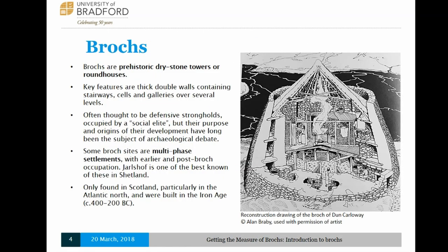In a nutshell, the best way to describe brochs is as prehistoric dry stone towers or roundhouses. They're circular and have key unique architectural features, the main one being massive double walls as you can see on this reconstruction drawing. Because of their monumental nature, they've often been interpreted as elite strongholds, but this is very debatable. They were originally built in the Iron Age, roughly between 400 to 200 BC, but there's also much evidence of later reuse.